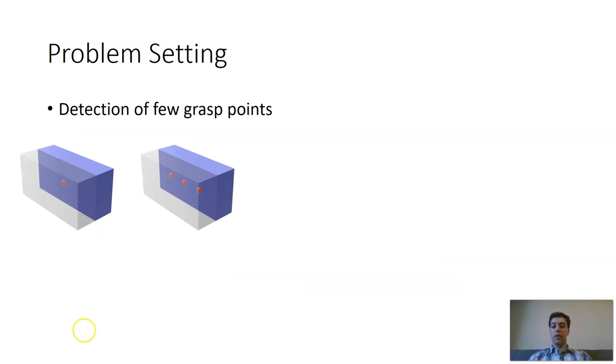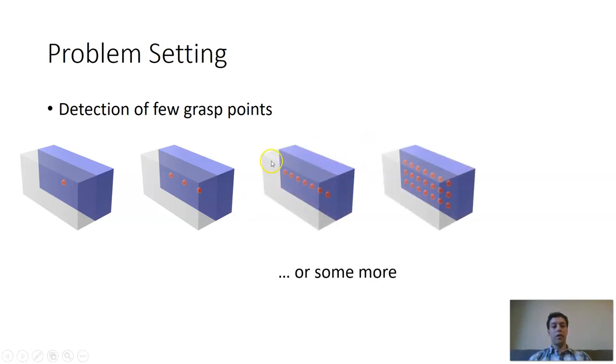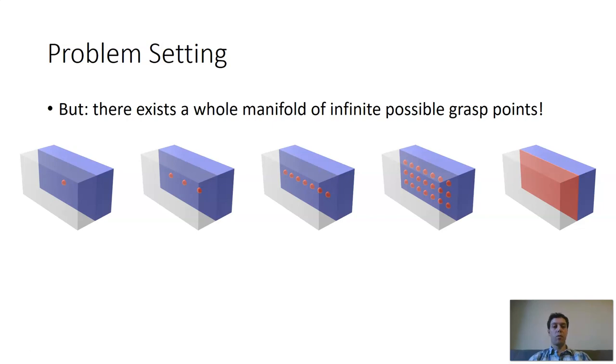If we are considering such a cuboid here, then our algorithm could, for example, show us this one good grasp here, or maybe even a few more points where we can grasp the object. If our grasp algorithm is very good, then it can tell us even more points where to grasp the object, like along this line, or if we span these points also in the upper and lower direction, even this huge amount of points. But if we think this thought to the end, then actually what we have is way more points where the object can be grasped, namely a huge manifold of infinitely many possible grasp points. In this case, this would be the huge red area here on the cuboid where we can potentially grasp the object.